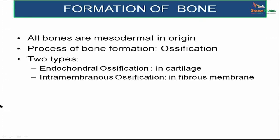A word about formation of bone: all bones are mesodermal in origin and are formed by the process of ossification. There are two types — endochondral ossification, where bones are formed in cartilage, and intramembranous ossification, where bones are formed in membrane.